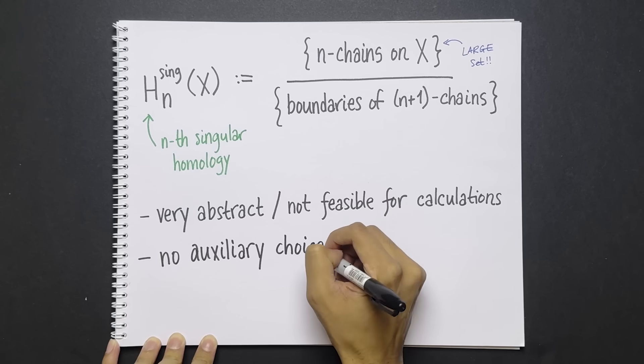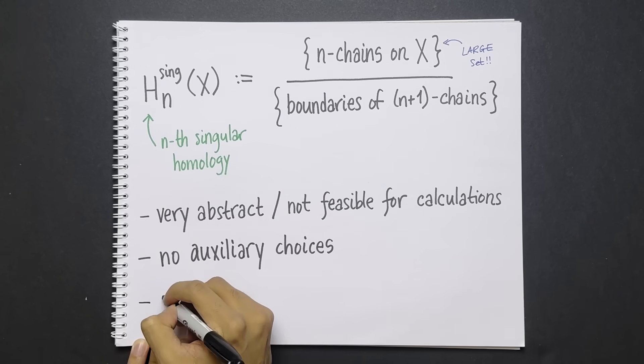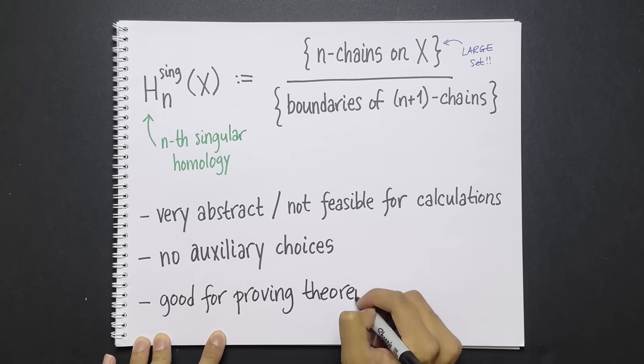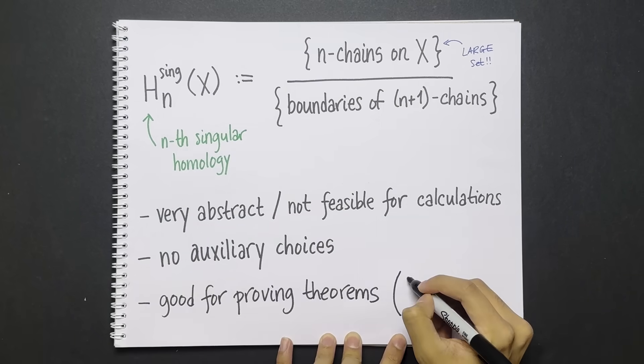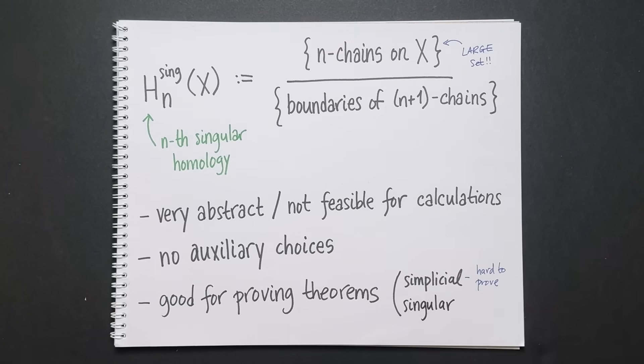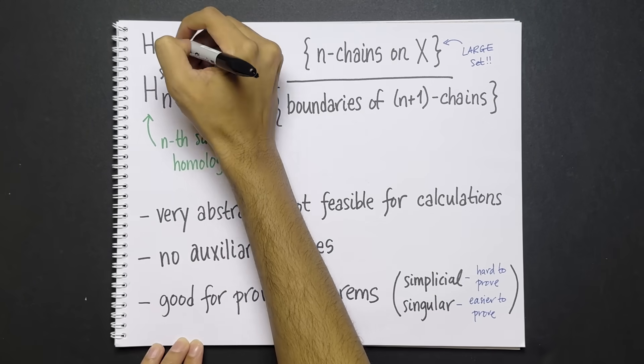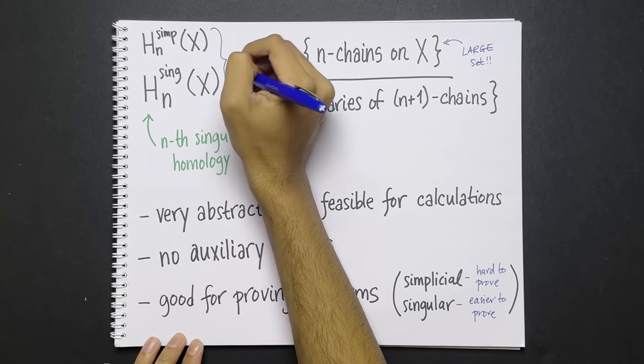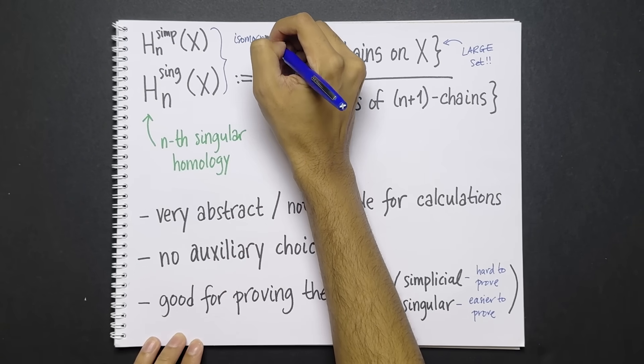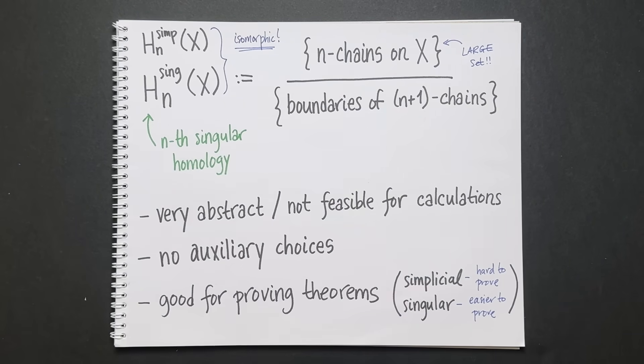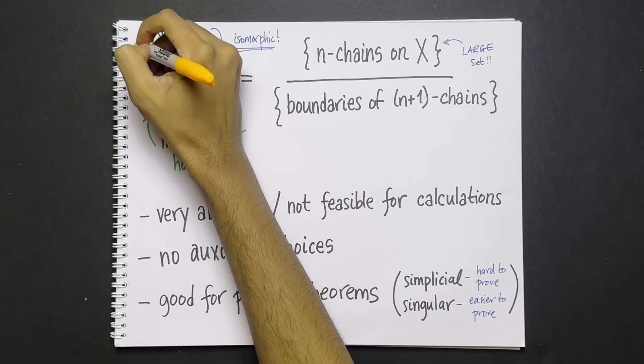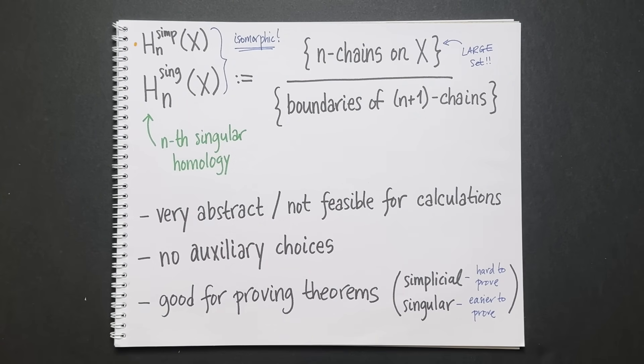But the benefit is that it doesn't involve making any auxiliary choices. The definition is completely intrinsic to the space. But there's another more important advantage. The benefit of singular homology is that it's good for proving theorems. A lot of theorems that are hard to prove in simplicial homology become effortless to align proofs when you use singular homology. But we should address this fact. So far we have two ways of defining homology. Singular and simplicial homology. Which I'll write as h n simp. A priori, they have nothing to do with each other. But it turns out, and this is by no means an obvious theorem, that they are in fact isomorphic. So the moral is, if you have to compute, use simplicial homology. But if you have to prove abstract theorems, use singular homology.